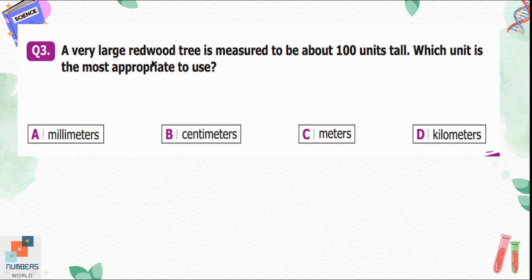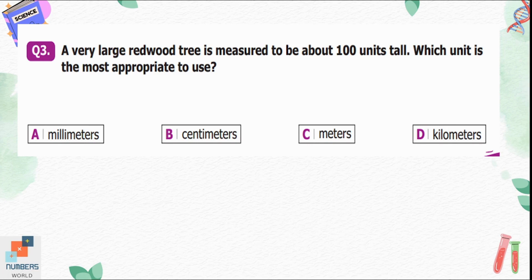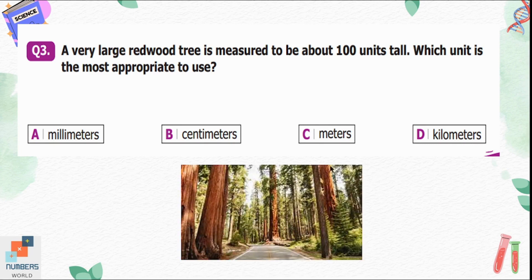Question number three: a very large redwood tree is measured to be about 100 units tall. Which unit is most appropriate? Option A, millimeters; B, centimeters; C, meters; D, kilometers. One millimeter is just about the tip of a nail. Centimeters are used to measure small objects like a pencil or eraser. Kilometers are used to measure the distance between two cities. So the height of a redwood tree is best measured in meters — option C is correct.